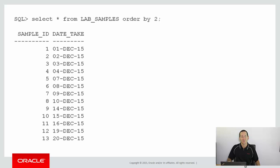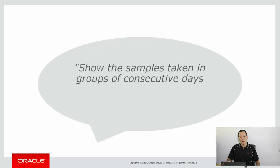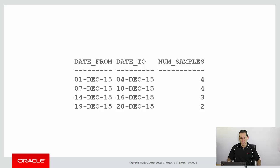Let's have a look at our data. Here I have my lab samples table, and you can see that although I've collected plenty of samples, I've still got some missing data. Between the 4th and the 7th of January I didn't get any samples, from the 10th to the 14th, and from the 16th to the 19th. Your manager then comes to you and says show me the consecutive groups of samples — and I need that report ASAP, because that's what managers do.